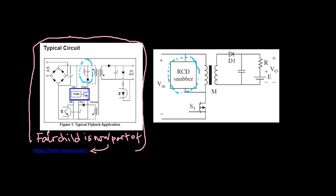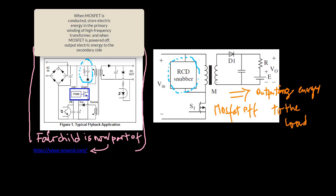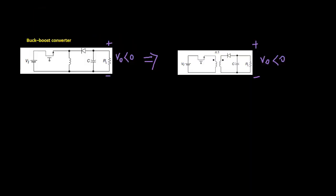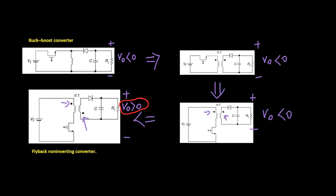The flyback converter is used in a very wide range of applications. Those outputting energy to the load during the cutoff of the MOSFET are all called flyback converters, which are evolved from the buck-boost converter. This figure shows the derivation of the PWM flyback converter from the buck-boost converter.